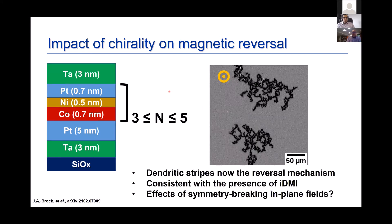Surprisingly, when we go from two repeats of cobalt-nickel-platinum to three, the reversal changes to stripe domains — similar to much thicker films. This is a signature of DMI: even for these very thin films, DMI significantly lowers the cost of adding domain walls, so reversal occurs via stripe domains even where it wouldn't be expected energetically. This is again consistent with the presence of interfacial DMI.